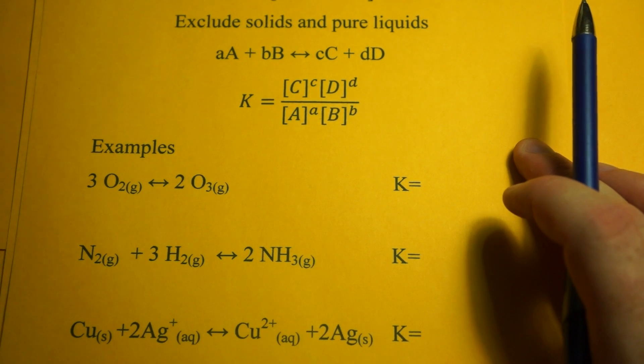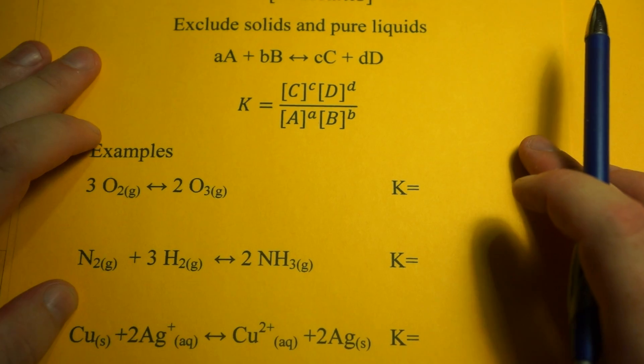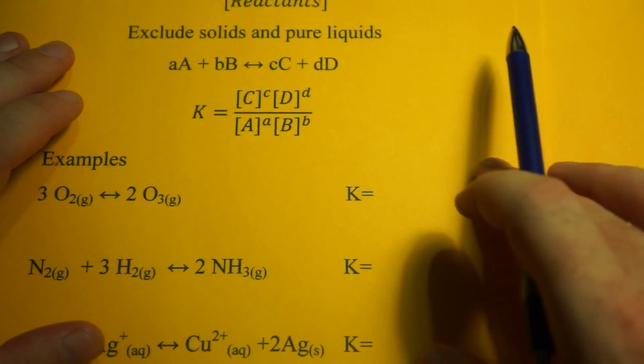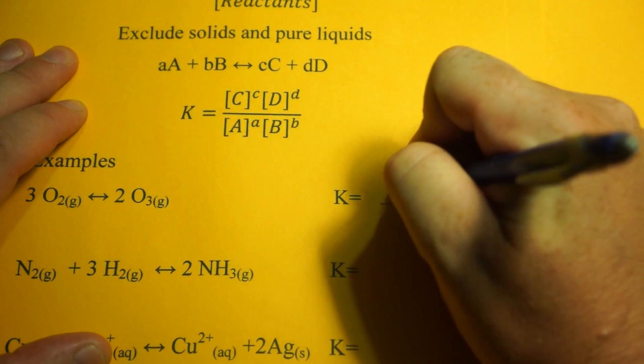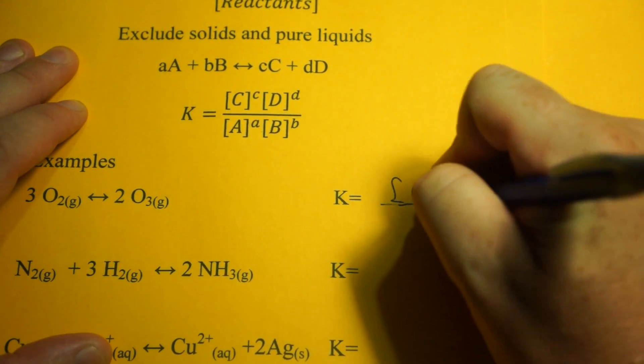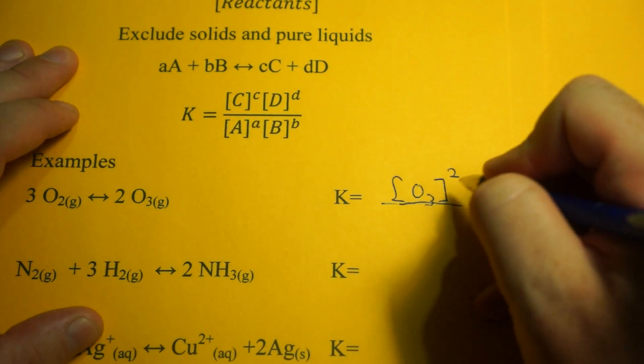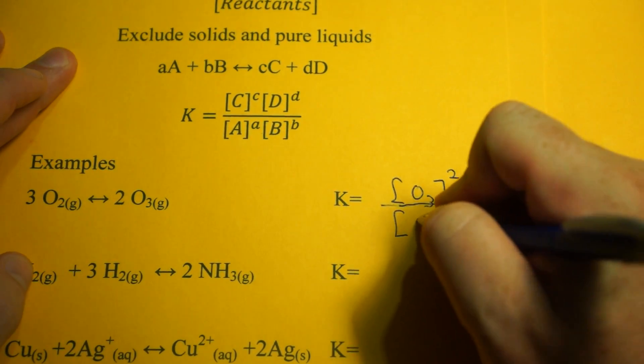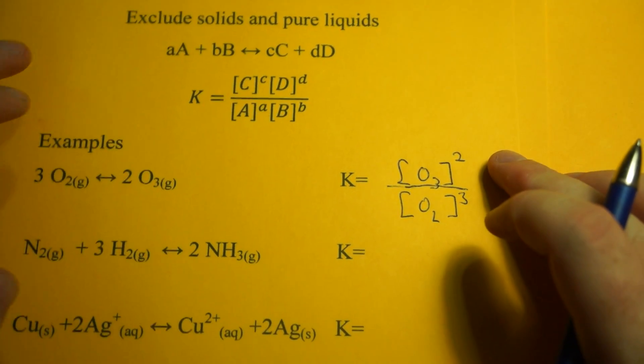You have 3 moles of oxygen forming 2 moles of ozone. We're going to do products over reactants. Put the brackets in. We put O3, which is our product, and that 2 is our exponent. Then we go to our reactant O2 and cube that. That's how you write your equilibrium expression.